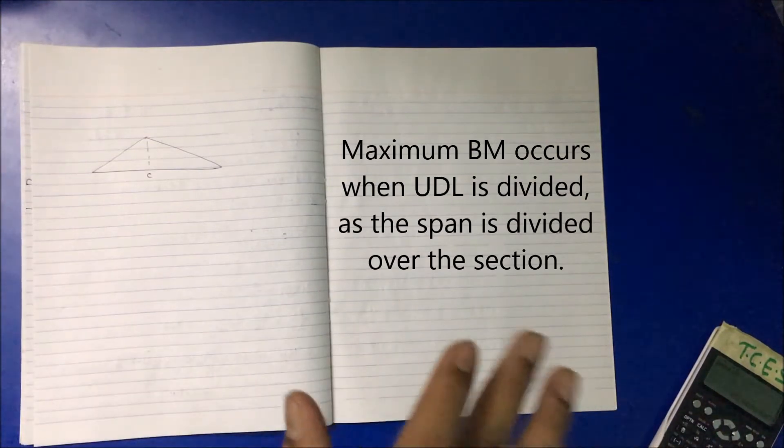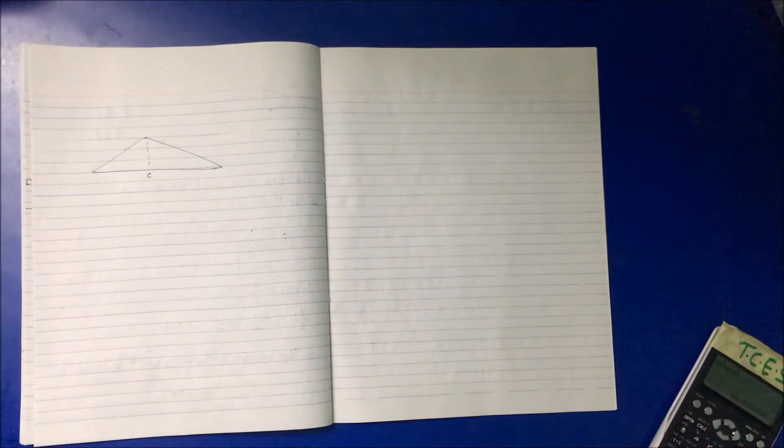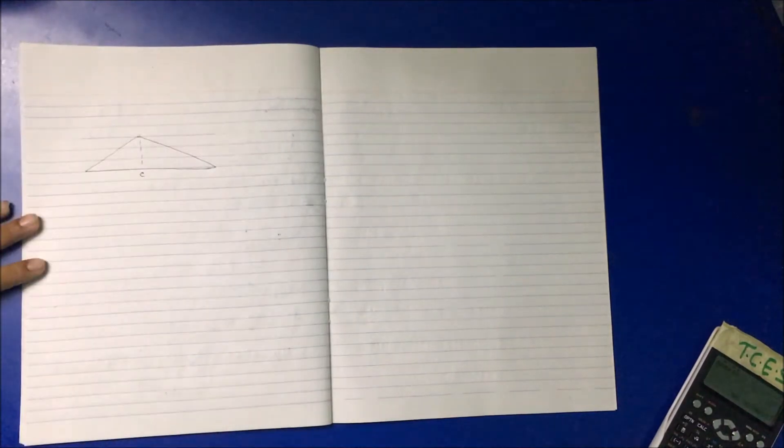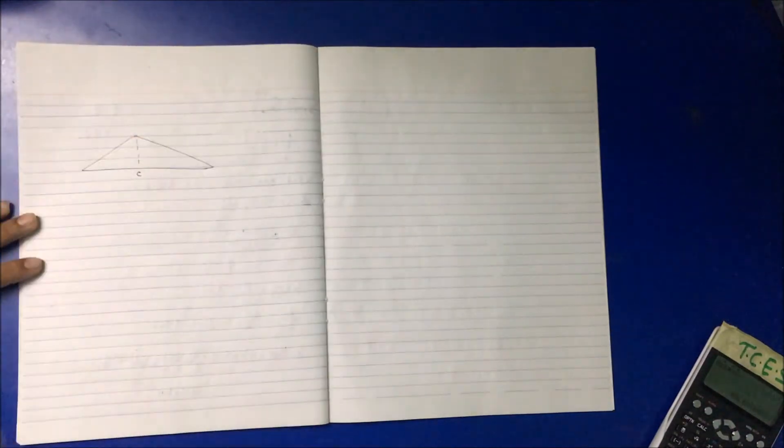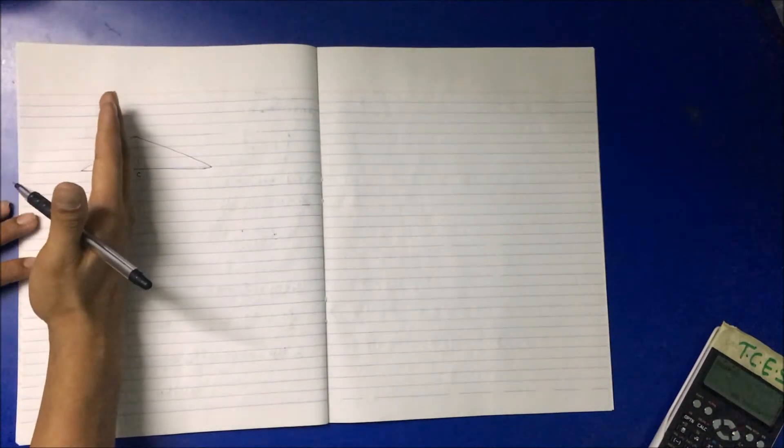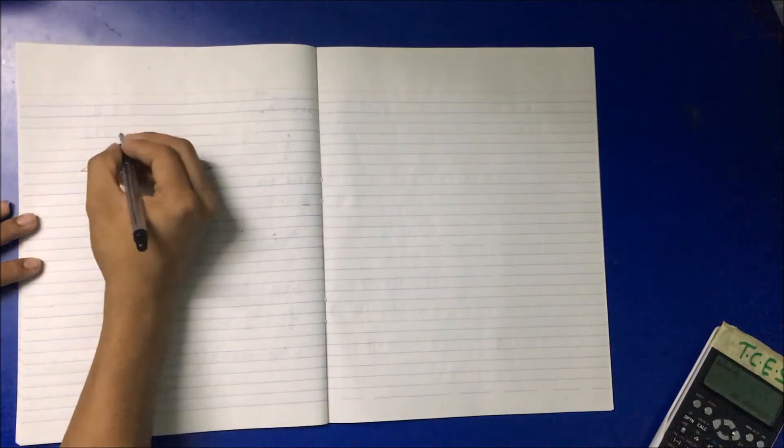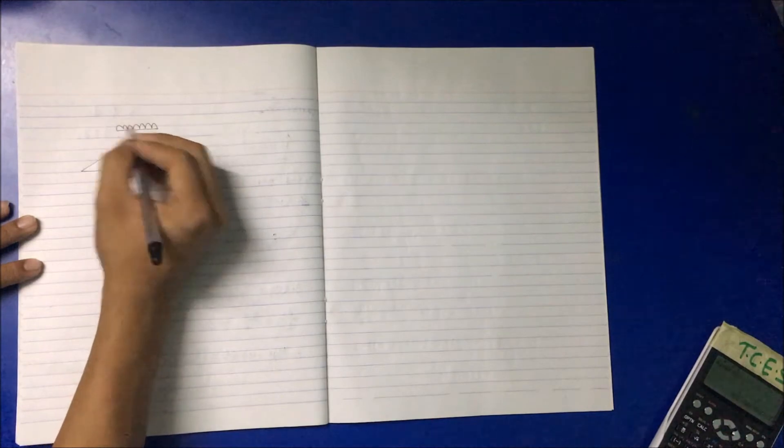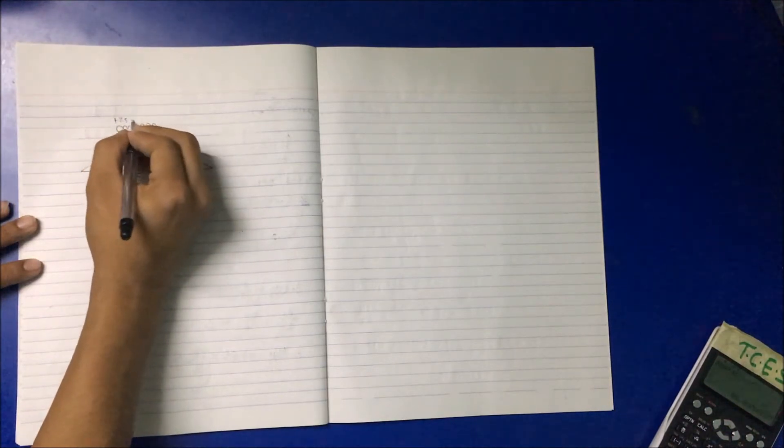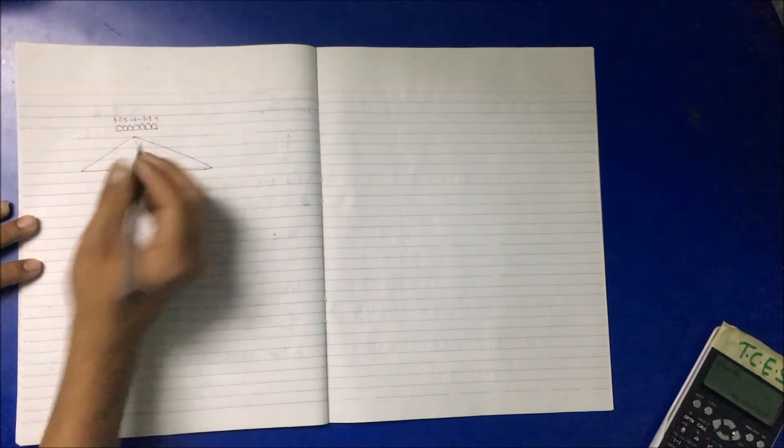This suggests that the span of the UDL is 5 meters, so it should be in the same ratio on both sides - this being 2.5 and this being 2.5 as the whole meter span of the UDL.